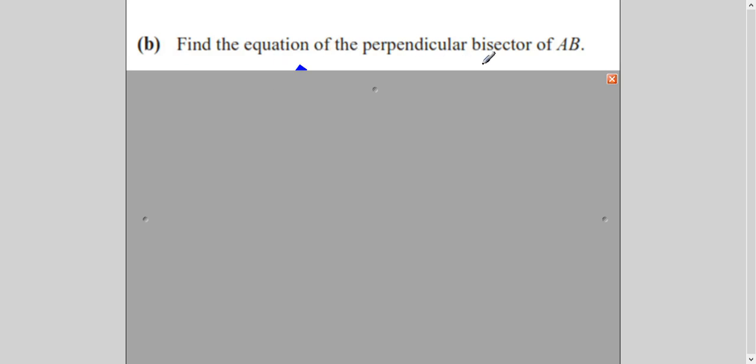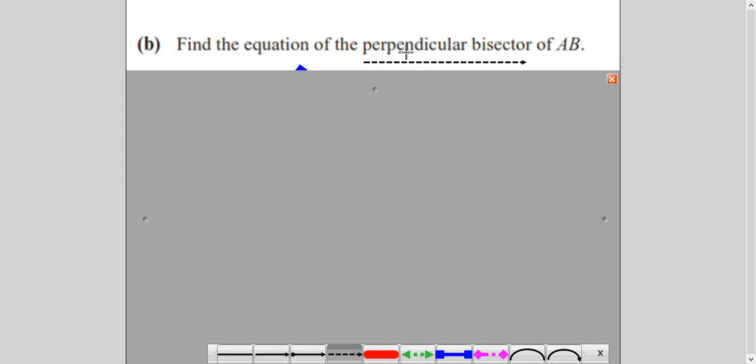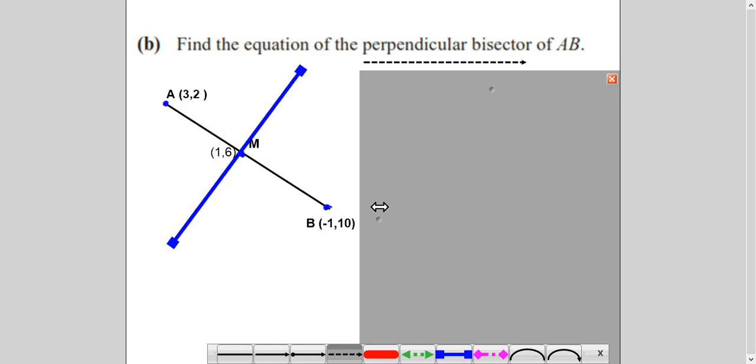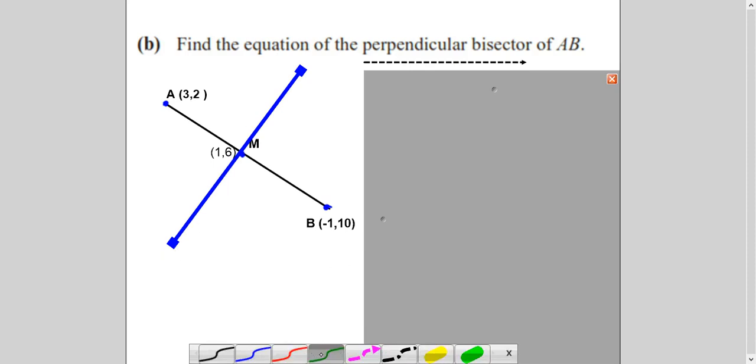Let's see part 2 of the question, which says find the equation of the perpendicular bisector of AB. Now, you need to understand what is a perpendicular bisector. Perpendicular mean 90 degree. When two lines are perpendicular to each other, they are meeting at 90 degree. Bisector mean dividing into two equal parts. This was the line AB. And we have found the midpoint of it, which is (1,6). Now I have to find the equation of this blue line, which is perpendicular to it, and dividing A and B into two equal parts. From A to M and M to B are equal in length.